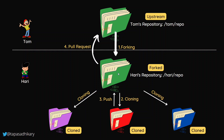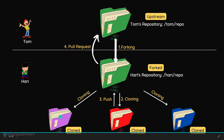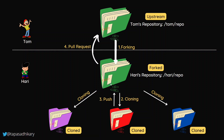Once this copy is available to Harry, he can do everything possible with the project — contribute, change things, extend it, or even just build his own project on top of it without reinventing the wheel. His workflow after getting the project: he clones it to his local desktop, makes all the changes, then pushes those changes to his forked repo. If he wants to contribute that change back to Tom's upstream repo, he raises a pull request.